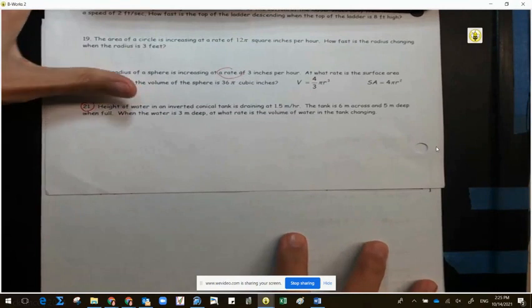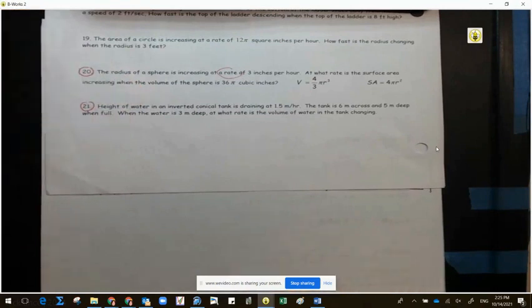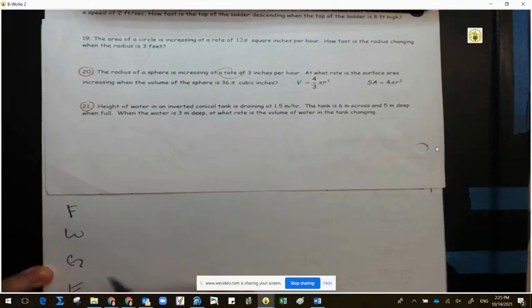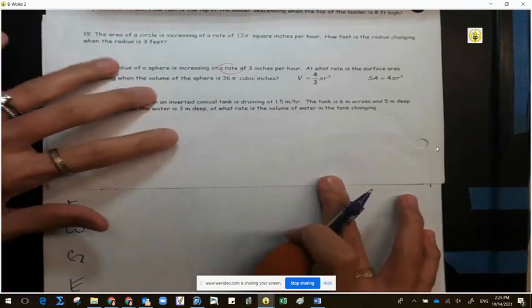The height of water in an inverted conical tank is draining at 1.5 meters per hour. The tank is 6 meters across and 5 meters deep. When the water is 3 meters deep, at what rate is the volume of water in the tank changing? Is this basically almost the same problem but different numbers as the second problem that we did a while ago?